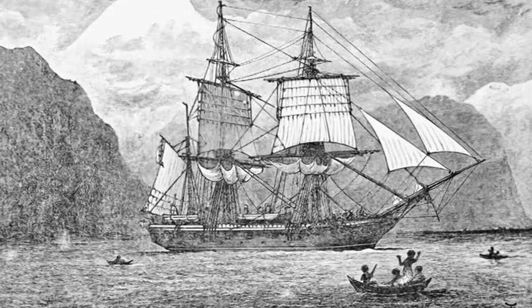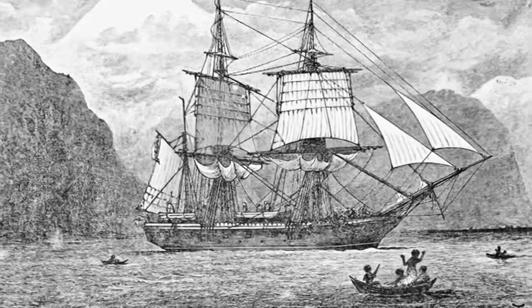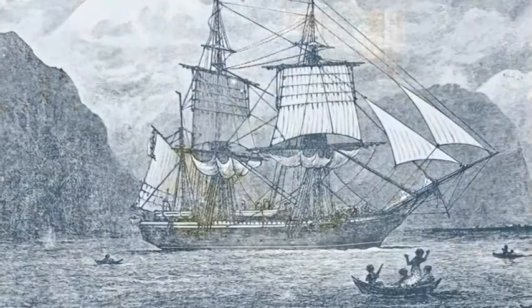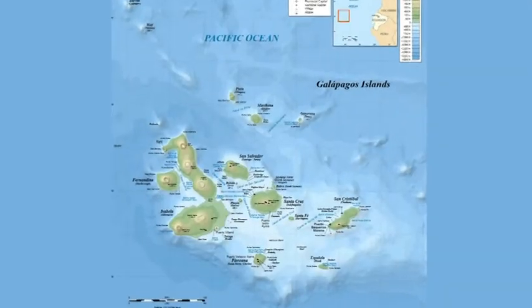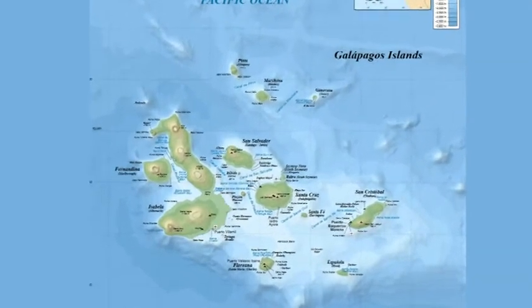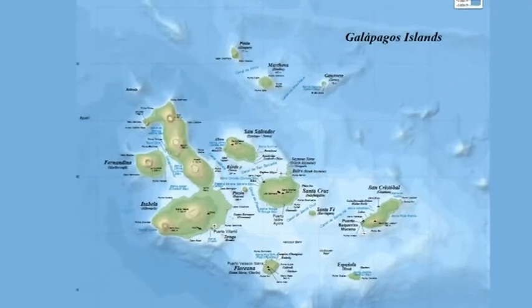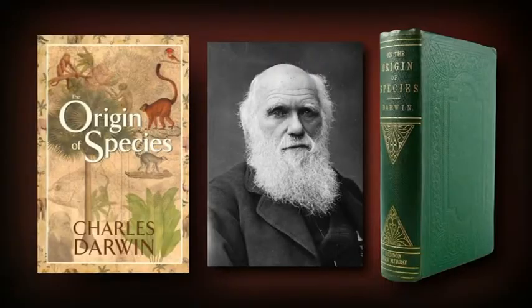He took his ship, the Beagle, to the Galapagos Islands which is about 600 miles off the west coast of South America. And there he thought he found something absolutely stunning which he wrote about in his book published in 1859, The Origin of Species.